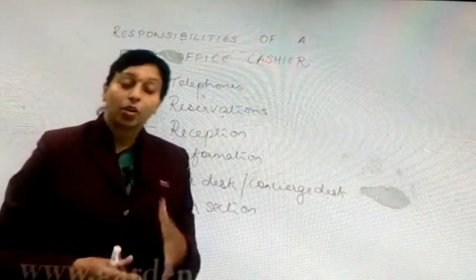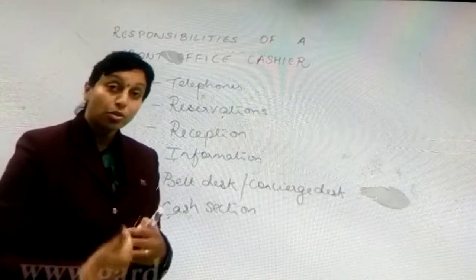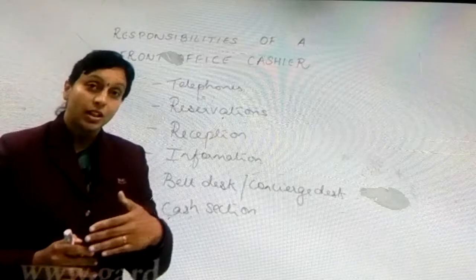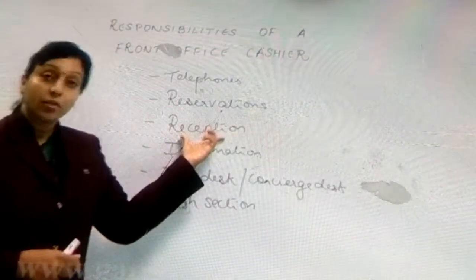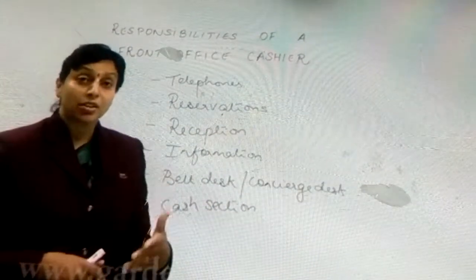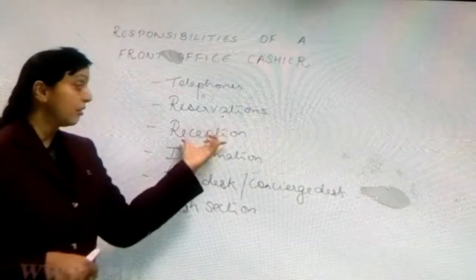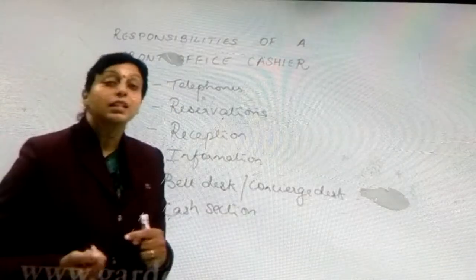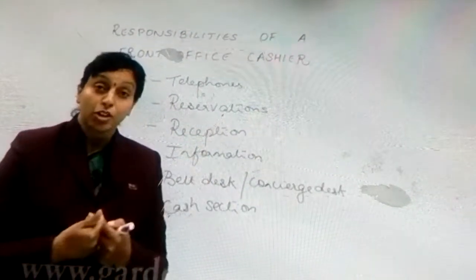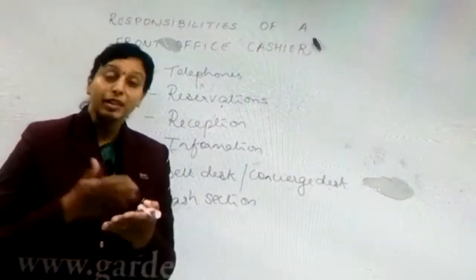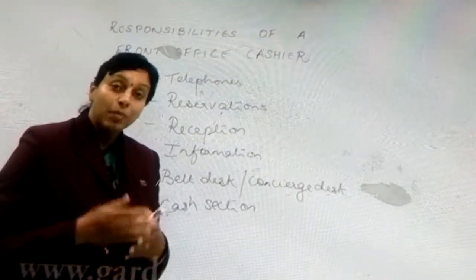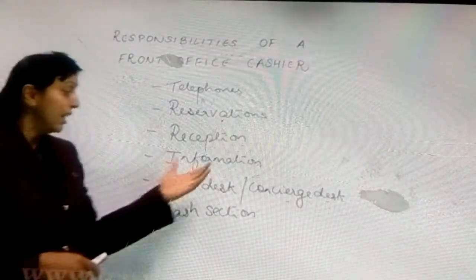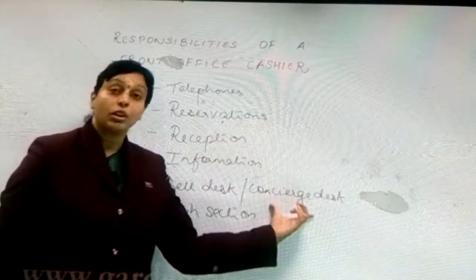Information is one section which may not be available in all hotels. As you walk into the hotel lobby, you can see the front desk counter. The front desk counter can be divided into two or three sections. The information section handles the keys of the hotel and gives information about the rooms, the facilities available in the hotel, the various functions happening in the hotel, and activities happening in the city.